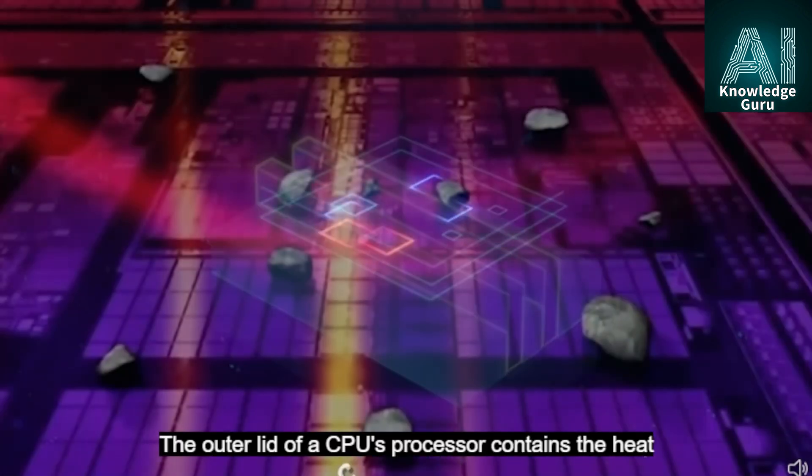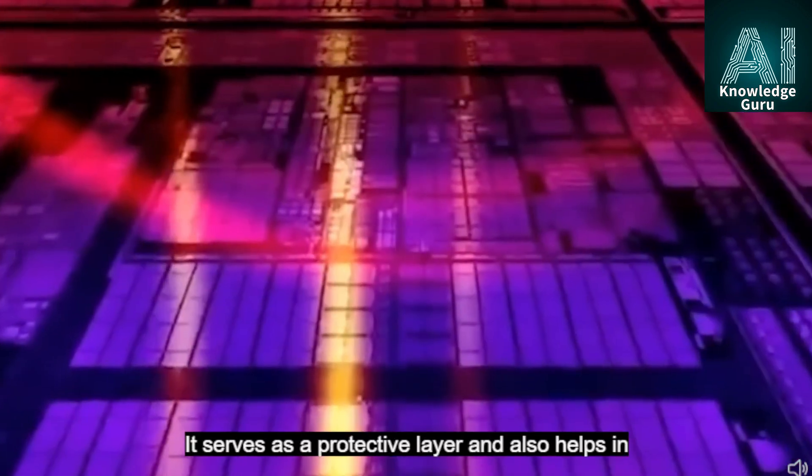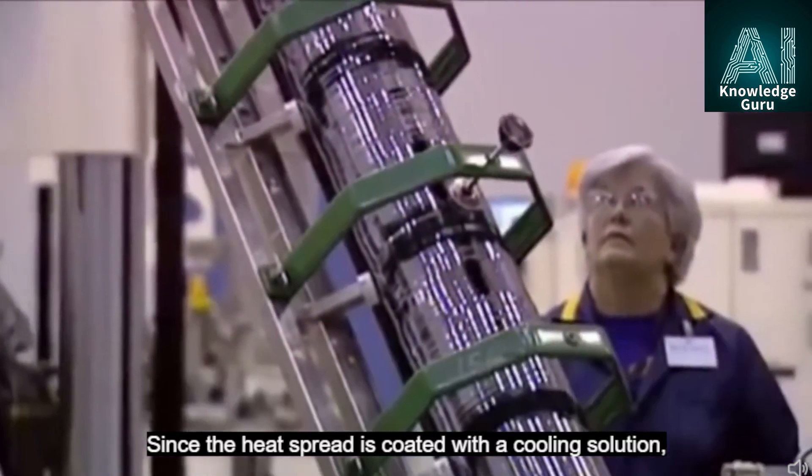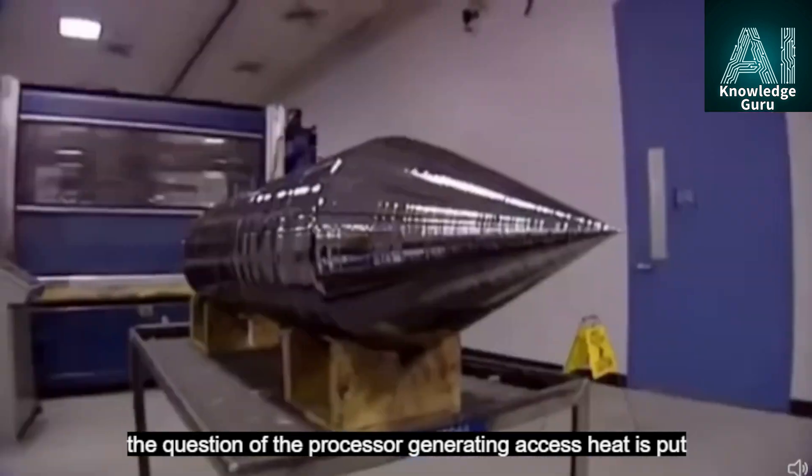The outer lid of a CPU's processor contains the heat spreader. It has a dual purpose. It serves as a protective layer and also helps in regulating the heat of the processor. Since the heat spreader is coated with a cooling solution, the question of the processor generating excess heat is put to check.